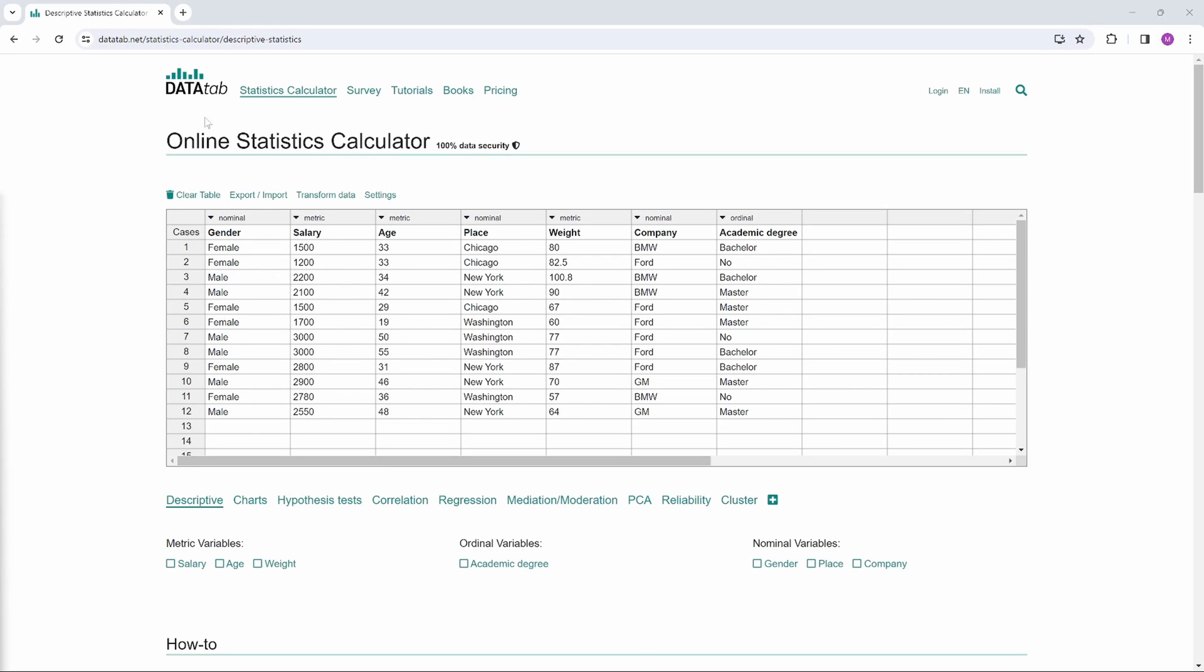And now I'll show you how DataTab helps you to find a suitable hypothesis test and of course calculates it and interprets the results for you. Let's go to datatab.net and copy your own data in here. We will just use this example dataset. After copying your data into the table, the variables appear down here.